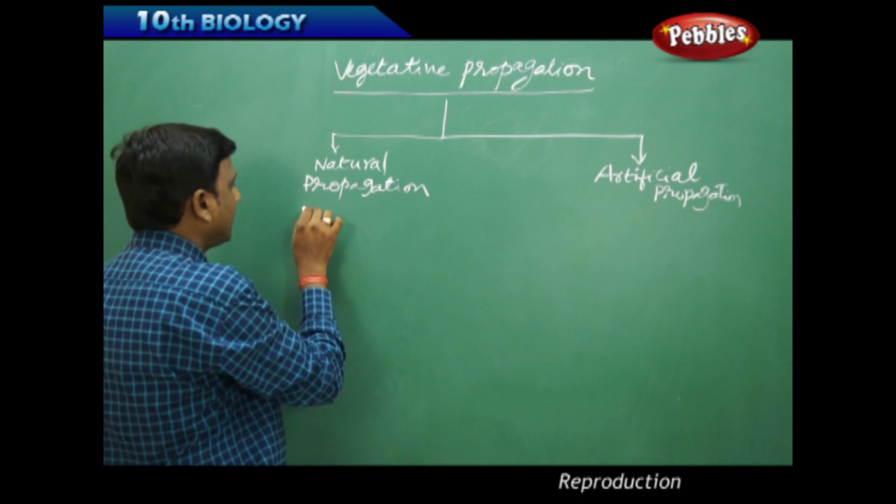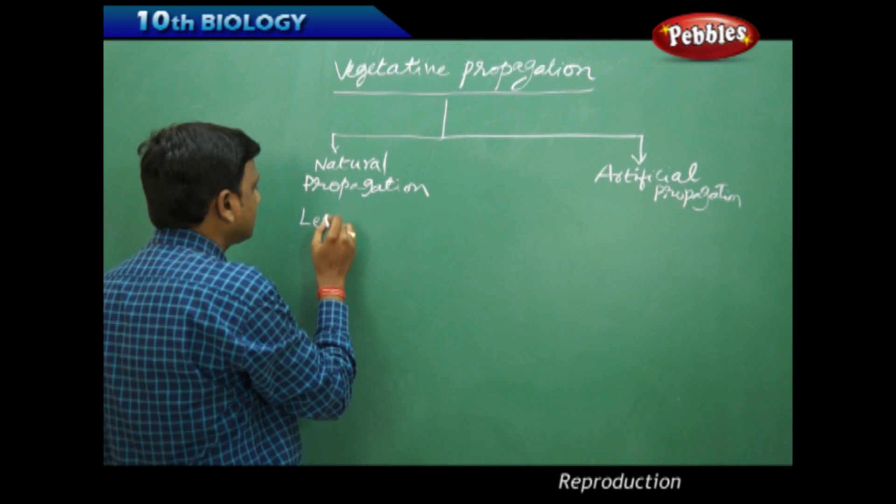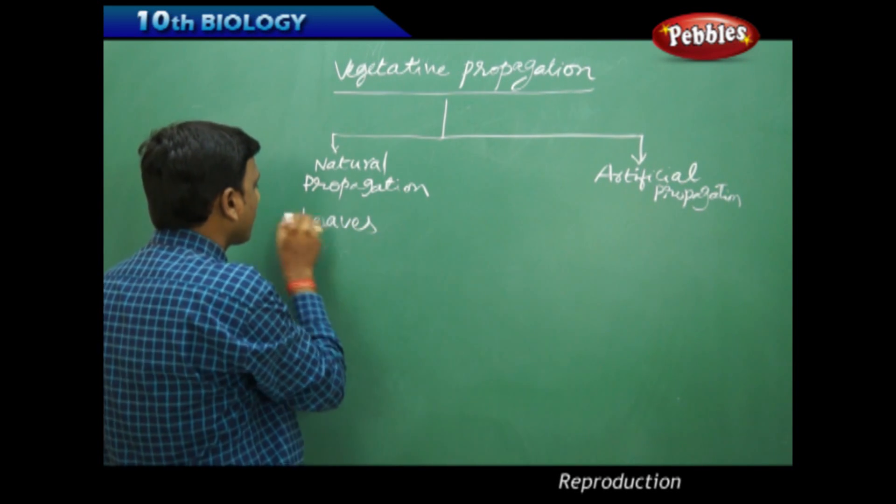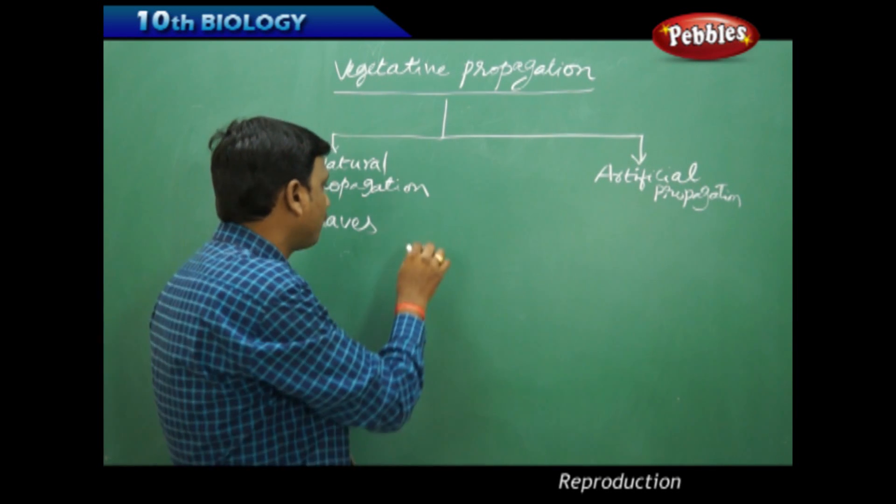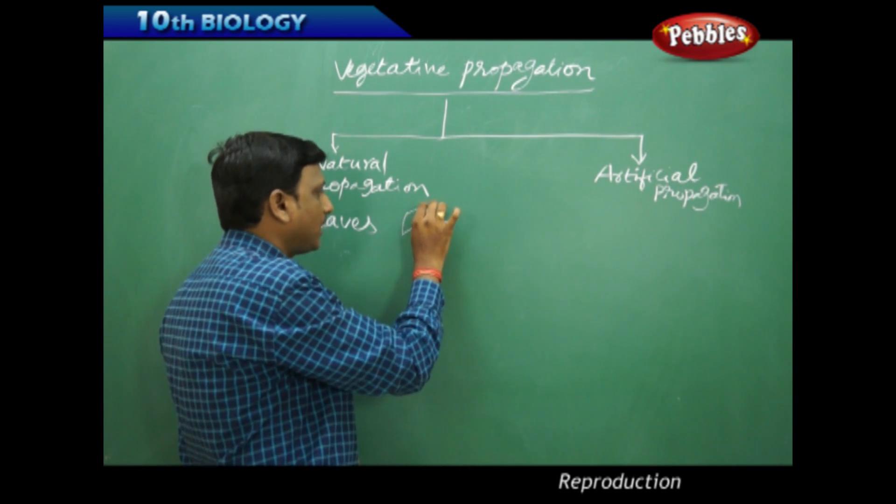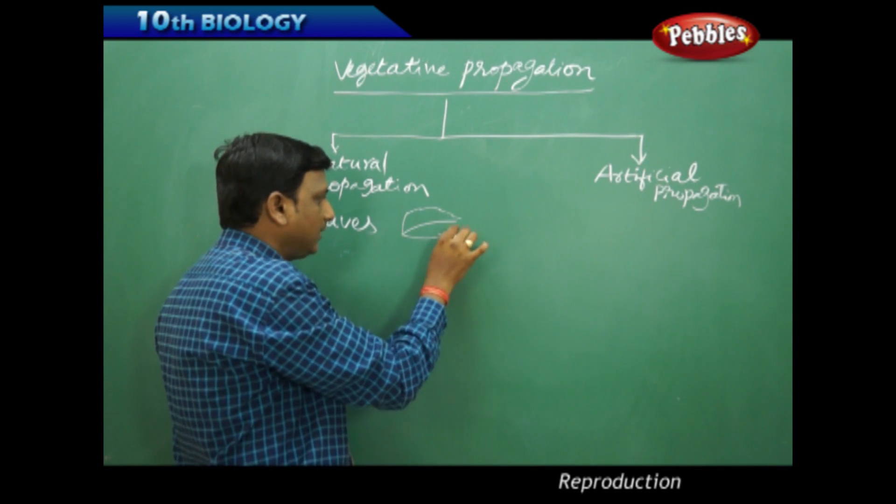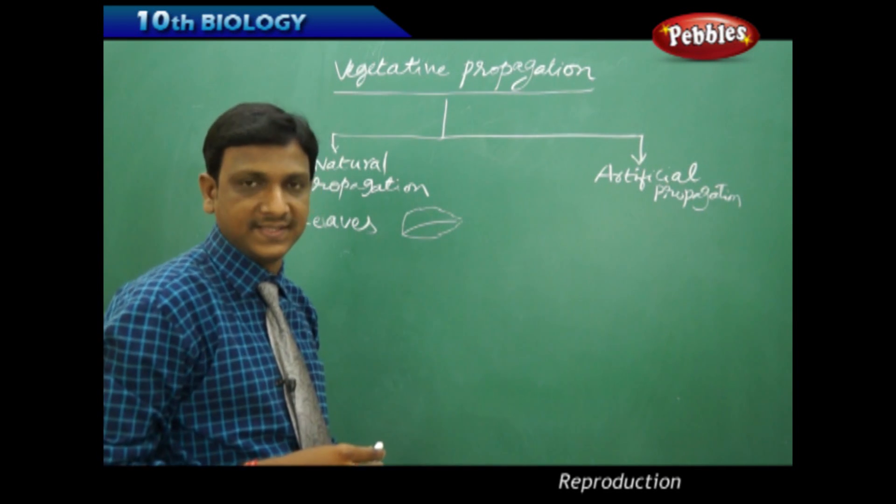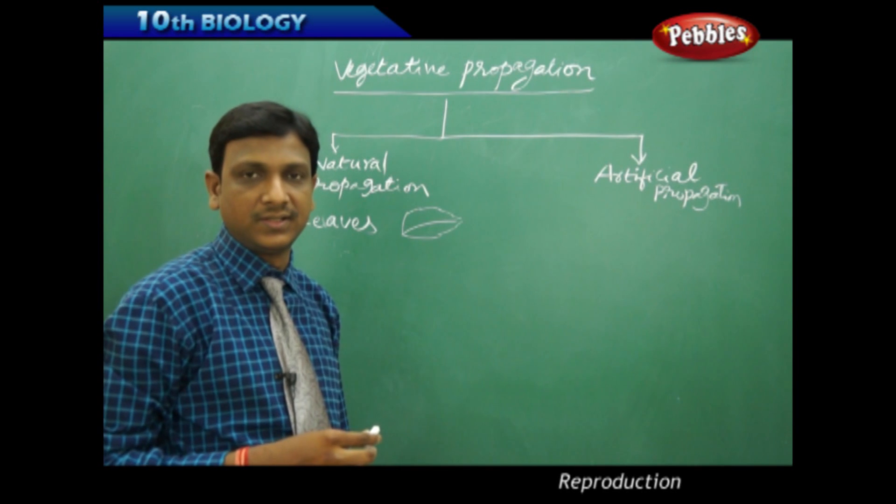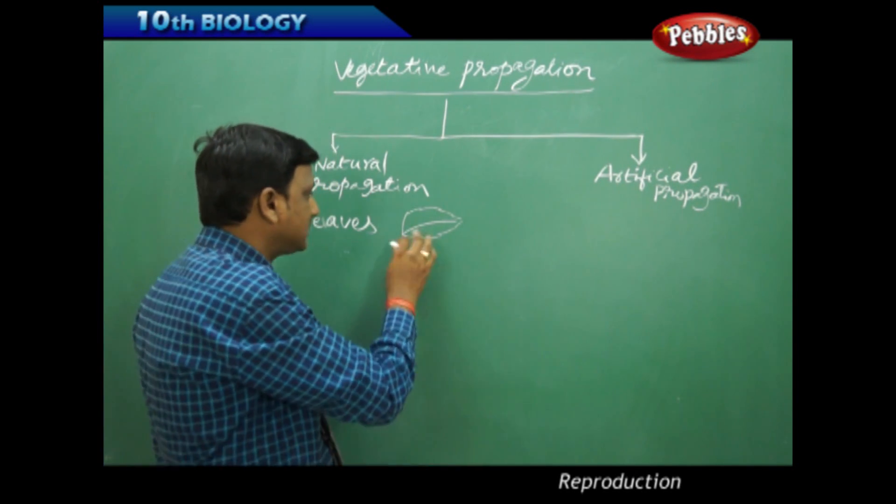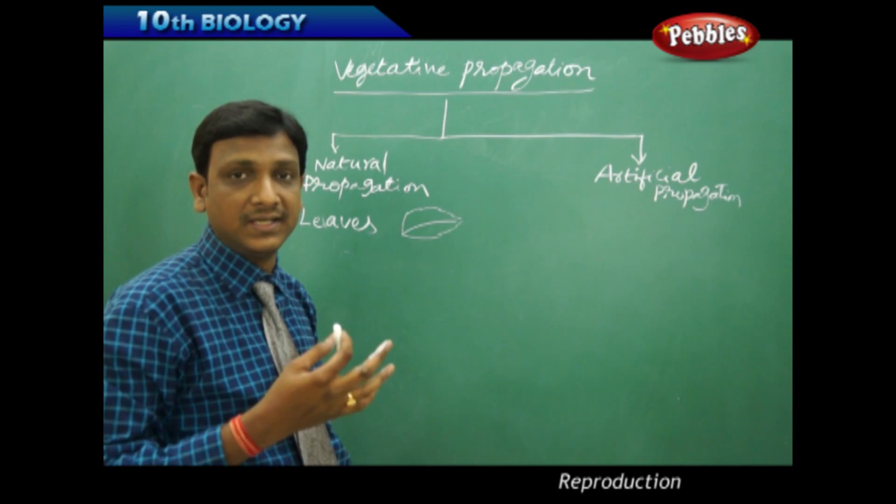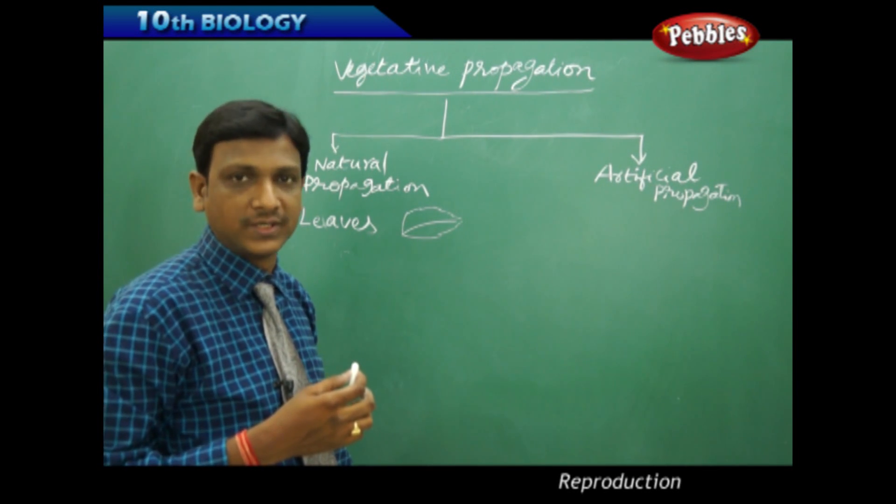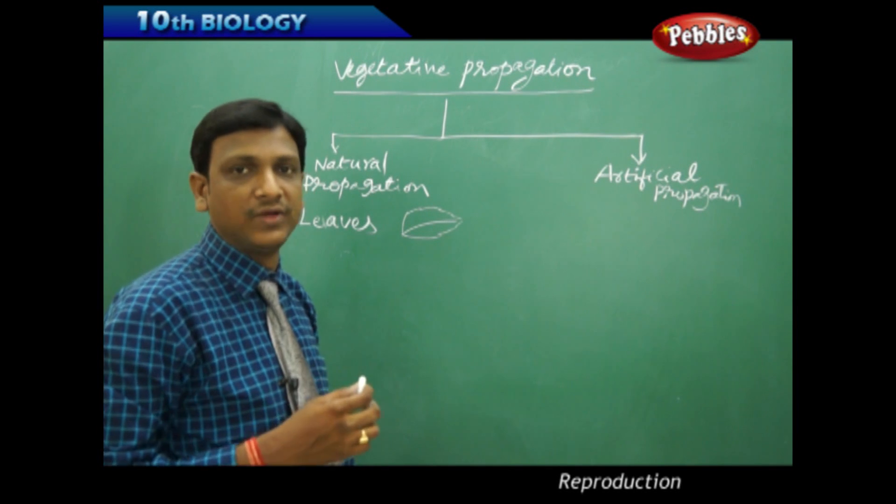Let us see the natural methods. In vegetative propagation from leaves, which plant we see? Bryophyllum. If you observe the bryophyllum leaf, bryophyllum plants are grown in houses as indoor plants. The bryophyllum is a succulent plant, which has water stored in its leaves. The leaves are very thick, filled with water.